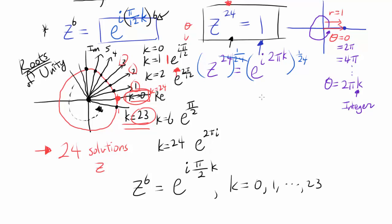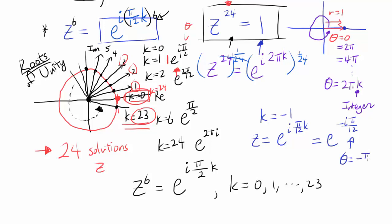You may ask: what about k = −1 or −2? With k = −1, you get e^(−iπ/12), where θ = −π/12. But this is the same value as k = 23. So negative values of k do not give additional solutions — every solution to Z^24 = 1 can be found by k from 0 to 23.